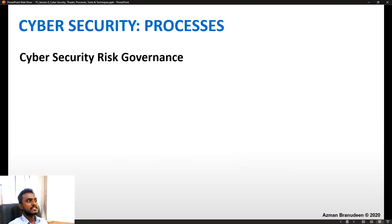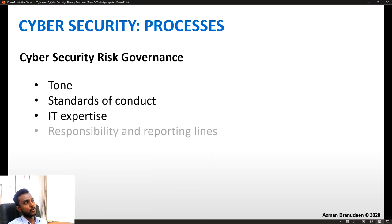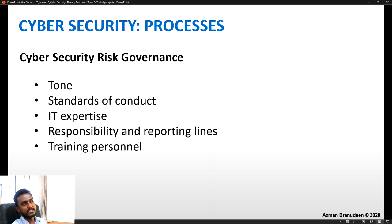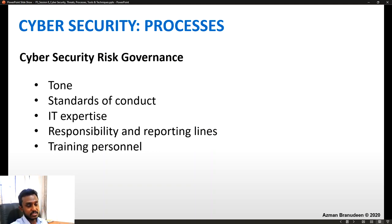Next we are going to look at cyber security processes. One fundamental principle is cyber security risk governance. Under risk governance you look at tone, standards of conduct, IT expertise, responsibility and reporting lines, and training personnel. If your company is well governed in terms of cyber security, all five elements are properly embedded in the governance structure — strong tone set from the top, good standards of conduct, IT expertise available, sound accountability, and continuously updated training.